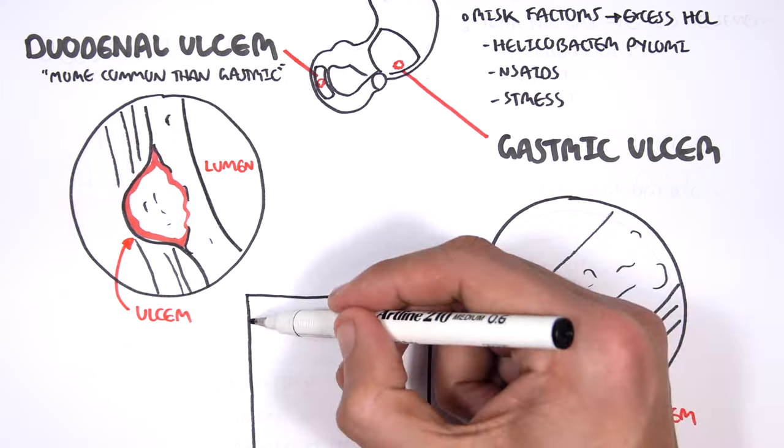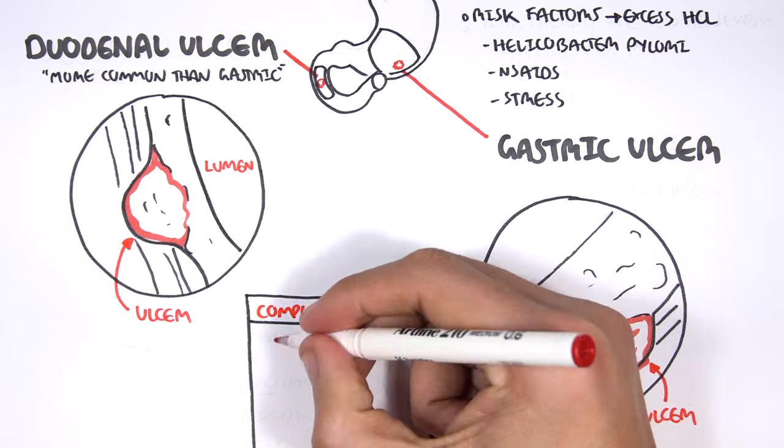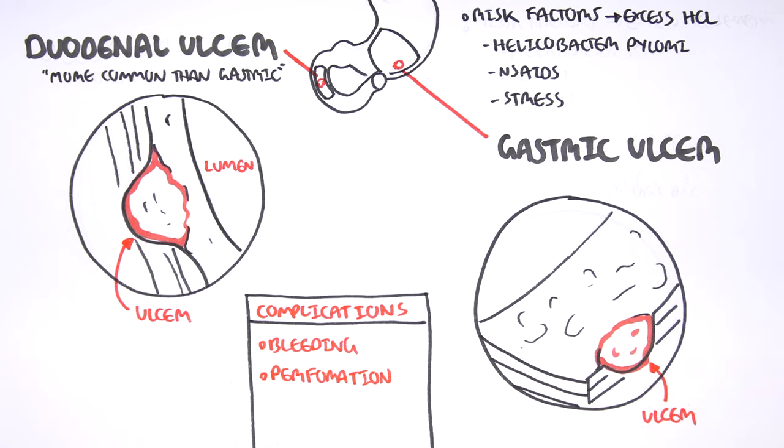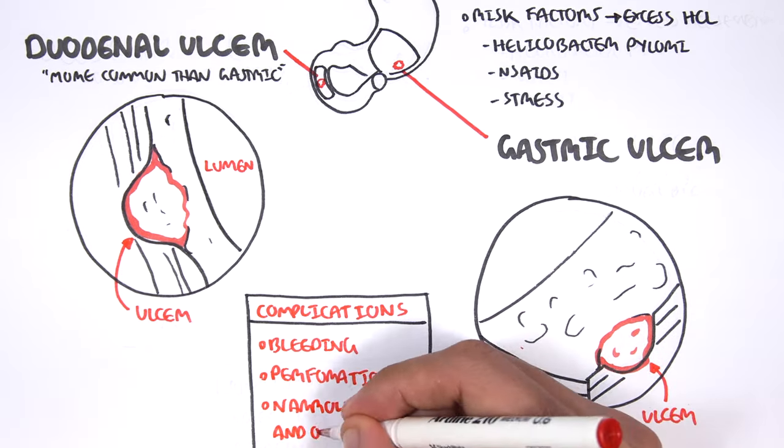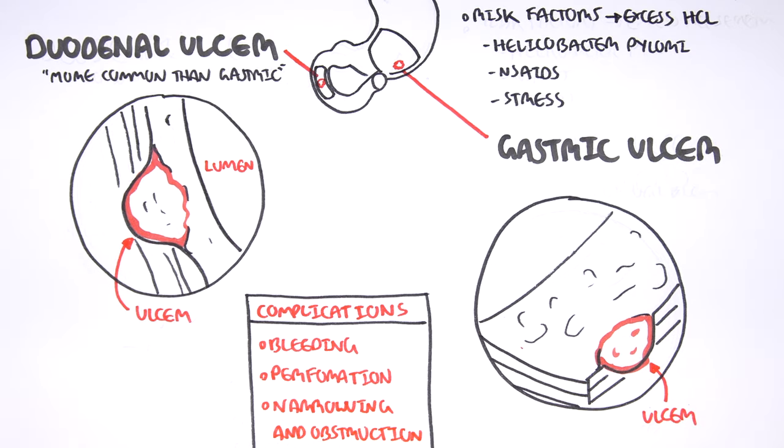We can have complications with ulcers. They can be bleeding. We can have perforation as well as narrowing and obstruction. Perforation means that the content can perforate into the peritoneum, which can cause peritonitis and severe inflammation and pain.